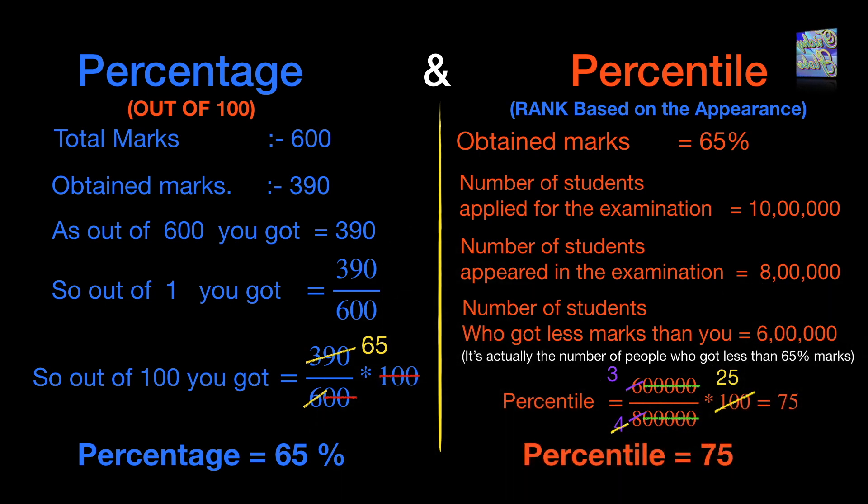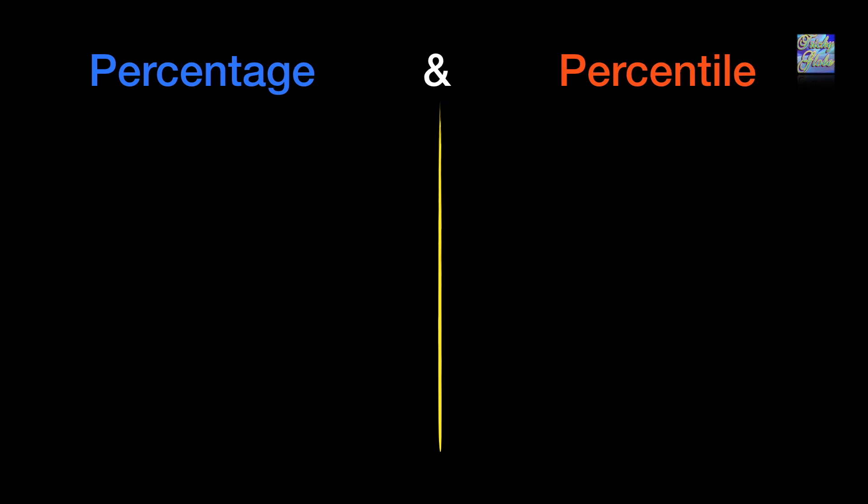So now you know how to find out percentage and percentile. Let me make this more clear so we can compare them perfectly. Percentage means out of 100, as I told you earlier, and percentile means rank based on total students appeared.